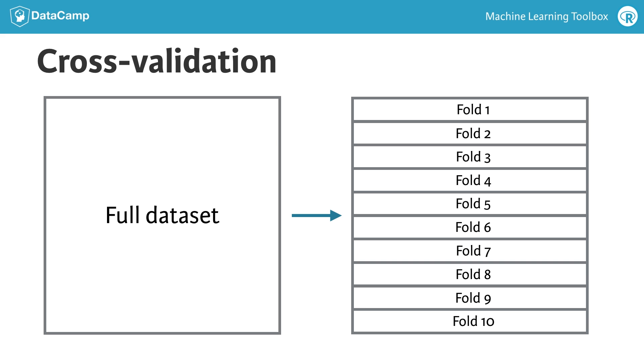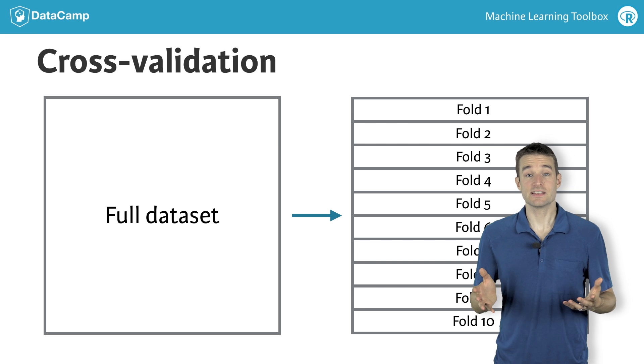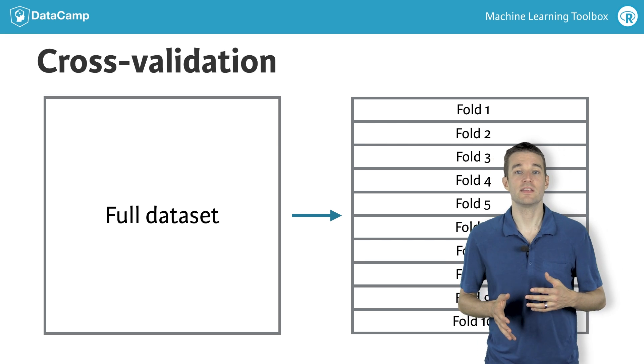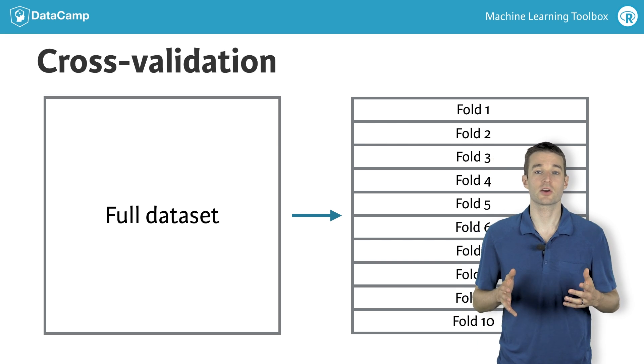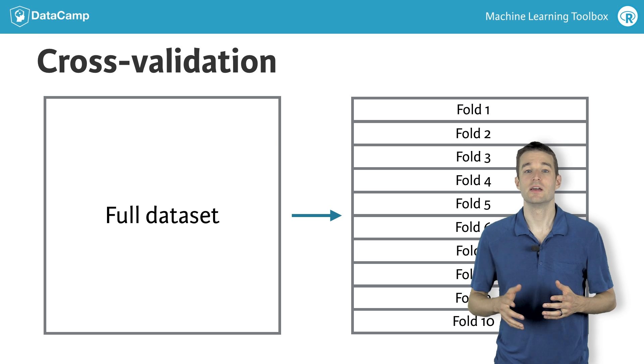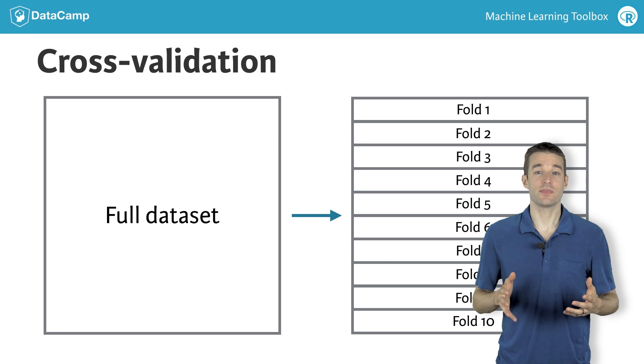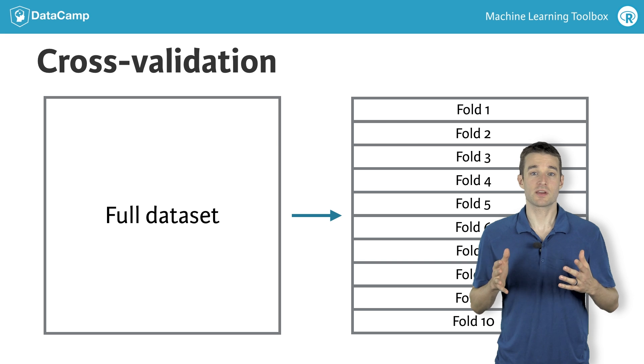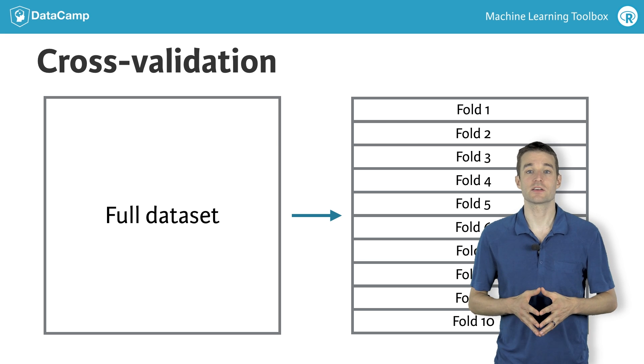We create these folds in such a way that each point in our dataset occurs in exactly one test set. This gives us 10 test sets, and better yet, means that every single point in our dataset occurs exactly once. In other words, we get a test set that is the same size as our training set, but is composed of out-of-sample predictions.